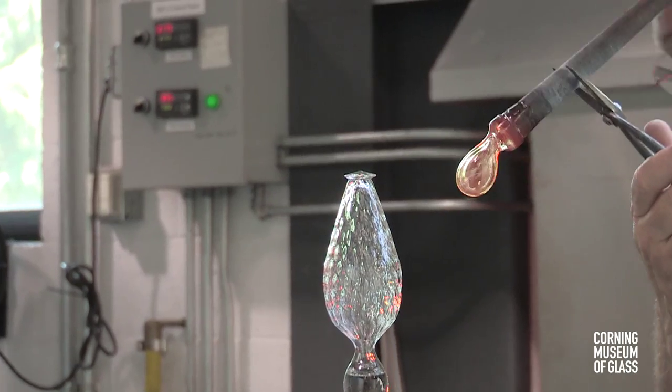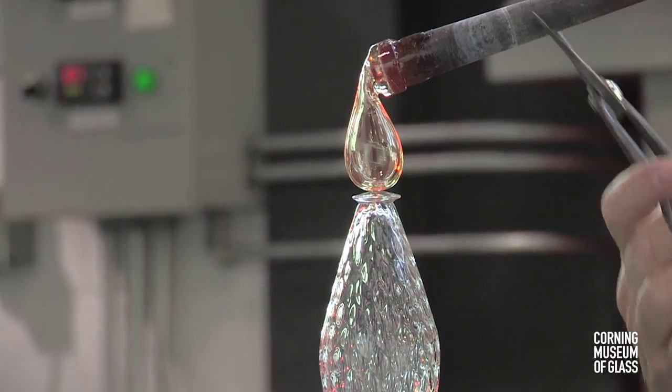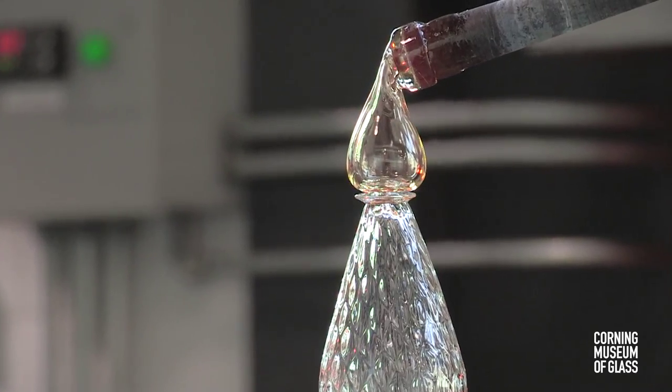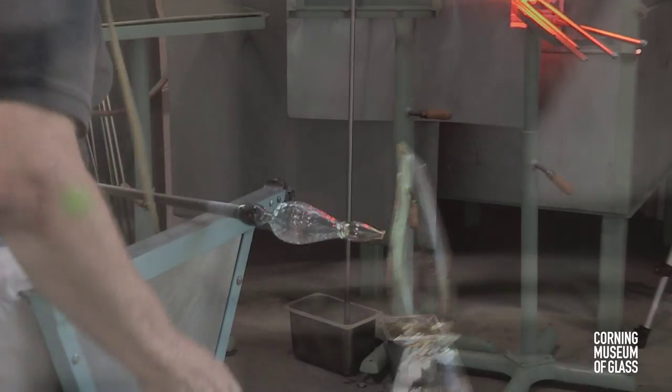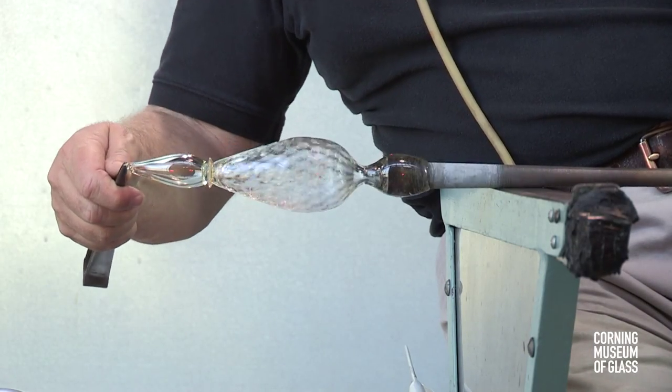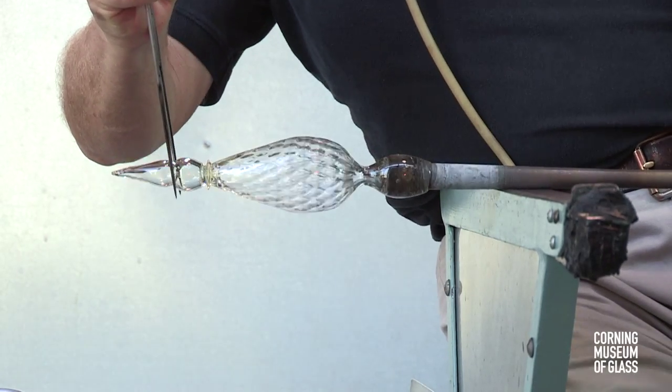The bubble is lowered into place, carefully centering it on the tip of the merese. The bubble is cut free of the blowpipe, and the excess glass is trimmed away.